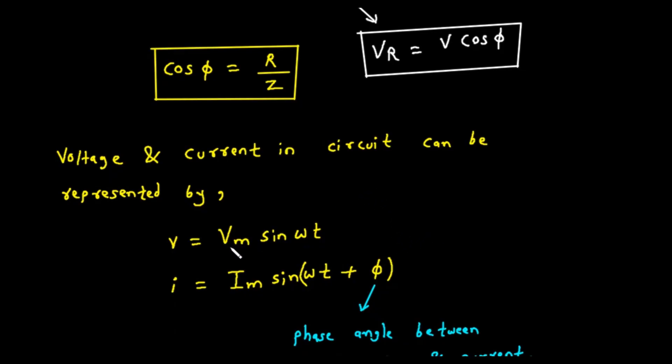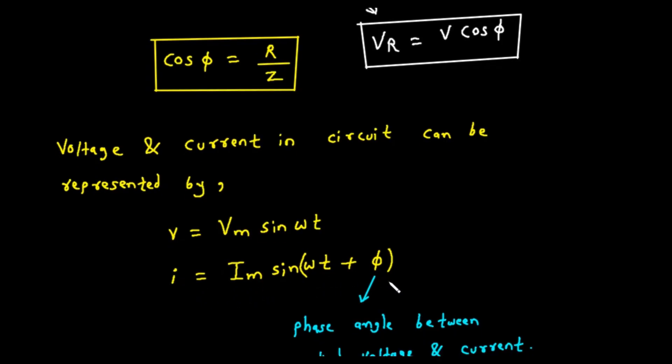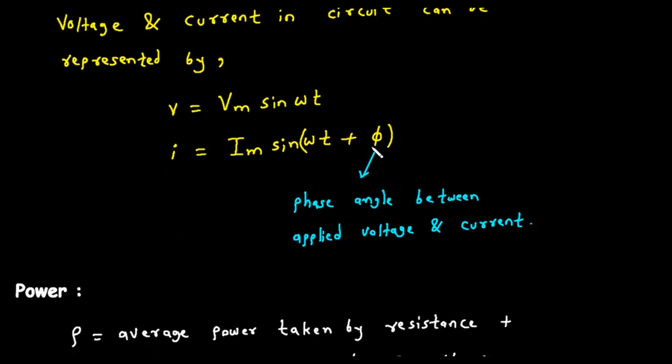To represent the circuit mathematically over time, we use sine functions. The instantaneous voltage, little v, can be written as Vm times sine of omega t, where Vm is the maximum or peak voltage. The instantaneous current, little i, is then written as Im times sine of omega t plus phi. That plus phi mathematically shows that the current's waveform is shifted ahead of the voltage's waveform.